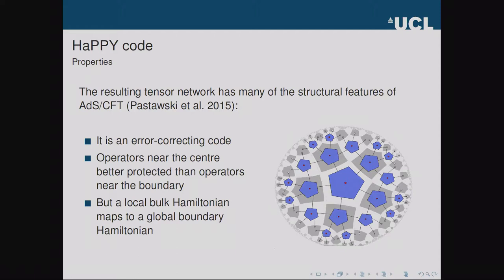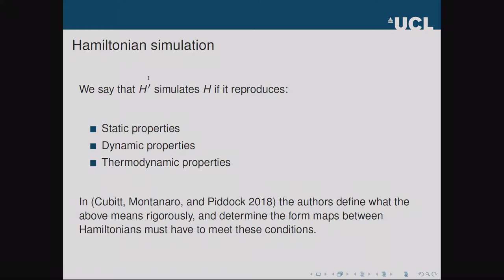This tensor network model captures qualitative features of ADS/CFT, but when you try to apply a Hamiltonian to the bulk degrees of freedom and map it to the boundary, you find that a local bulk Hamiltonian maps to a completely non-local boundary Hamiltonian, with global terms acting on the entire boundary at once. This is problematic: you don't expect conformal field theories to have global Hamiltonians, and a global Hamiltonian loses all relationship to the geometry of the spins it acts on — the dimensionality of this duality is an important feature we need to capture.